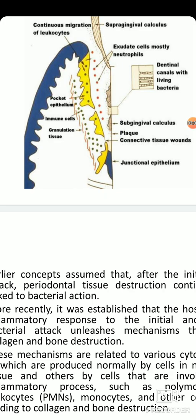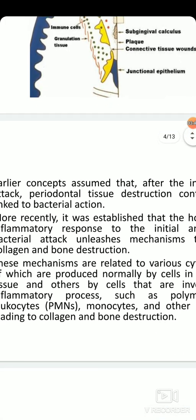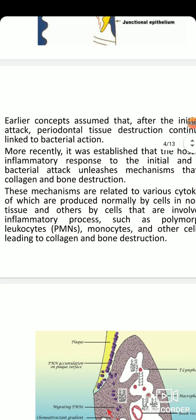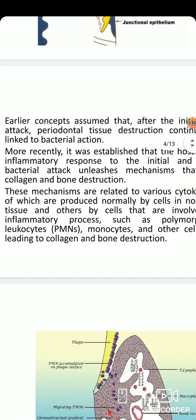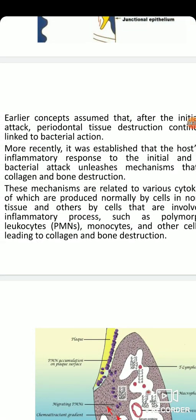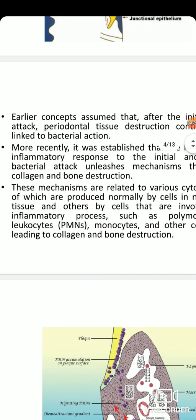There will be detachment of the sulcular epithelium, and this progresses to a shift in the junctional epithelium. Earlier concepts assumed that after the initial bacterial attack, periodontal tissue destruction continued continuously linked to bacterial actions. More recently, it has been established that the host immune-inflammatory response to the initial and persistent bacterial attack also causes mechanisms that can lead to collagen destruction and bone destruction.